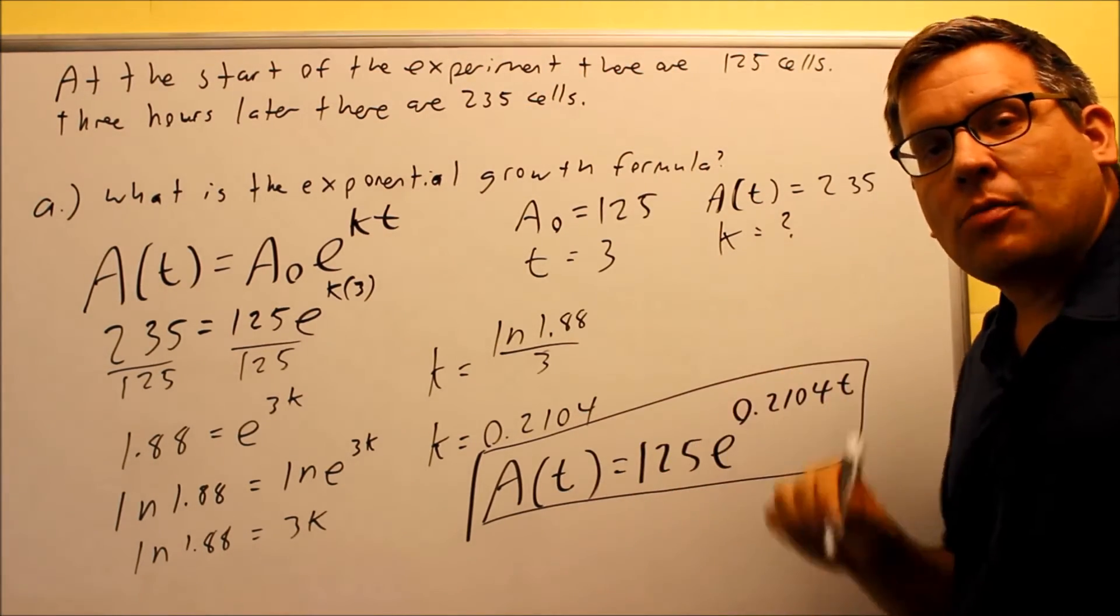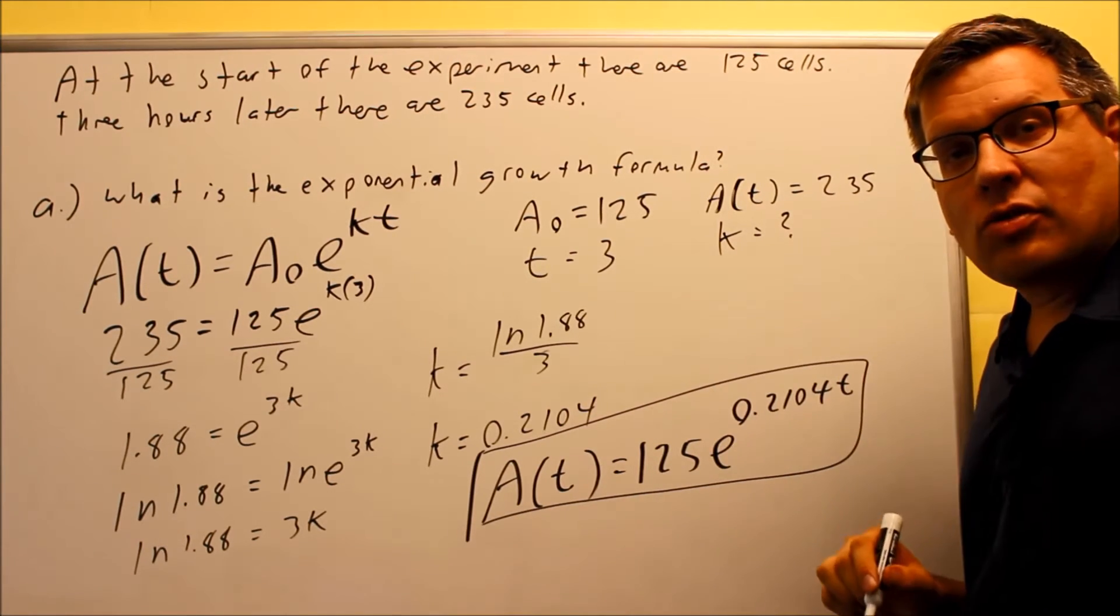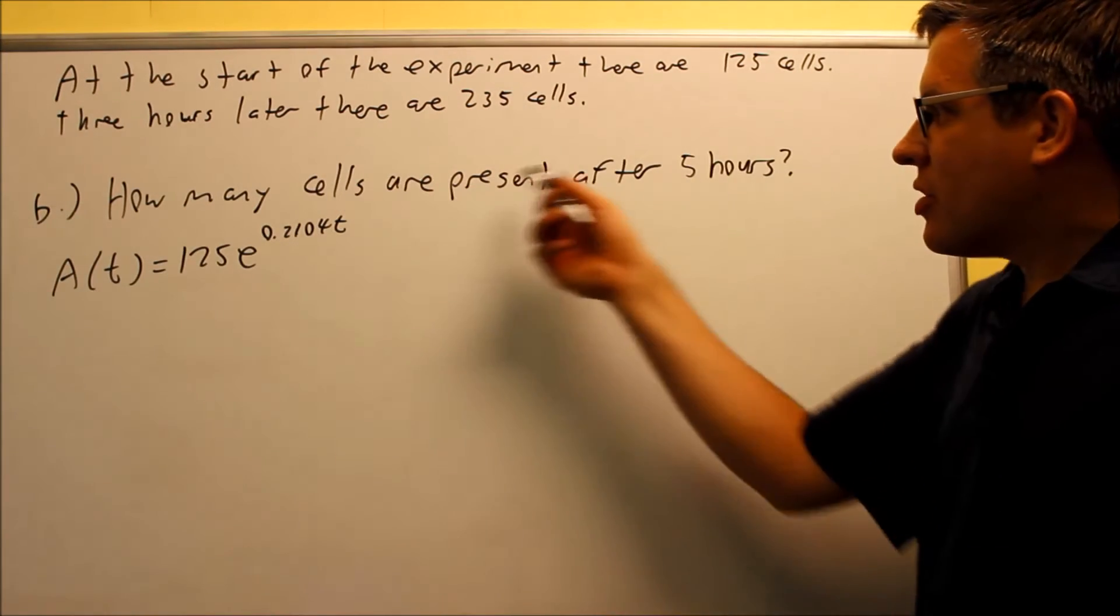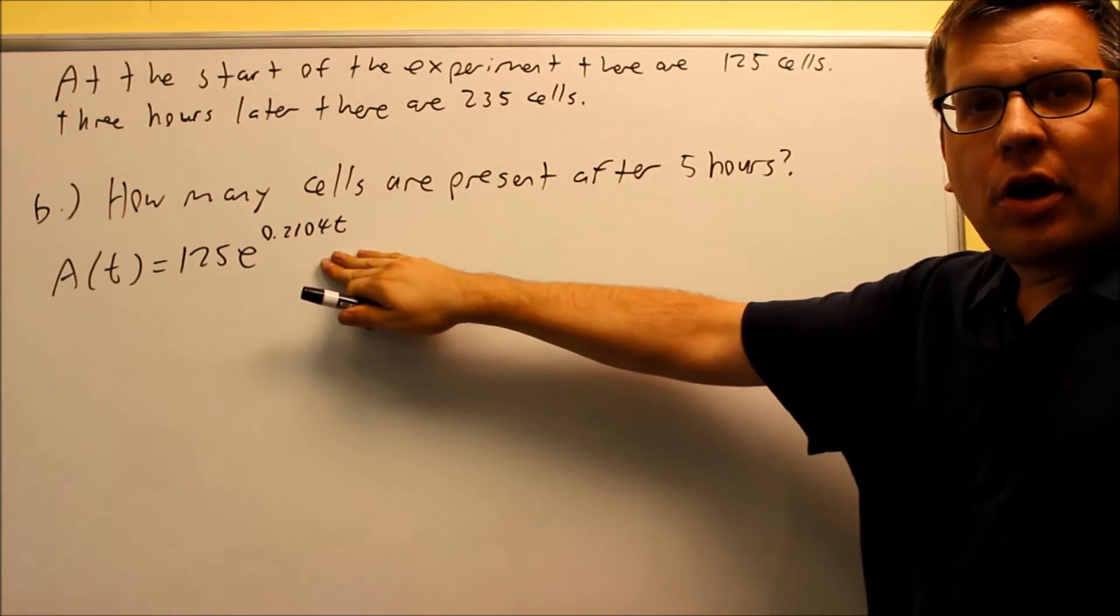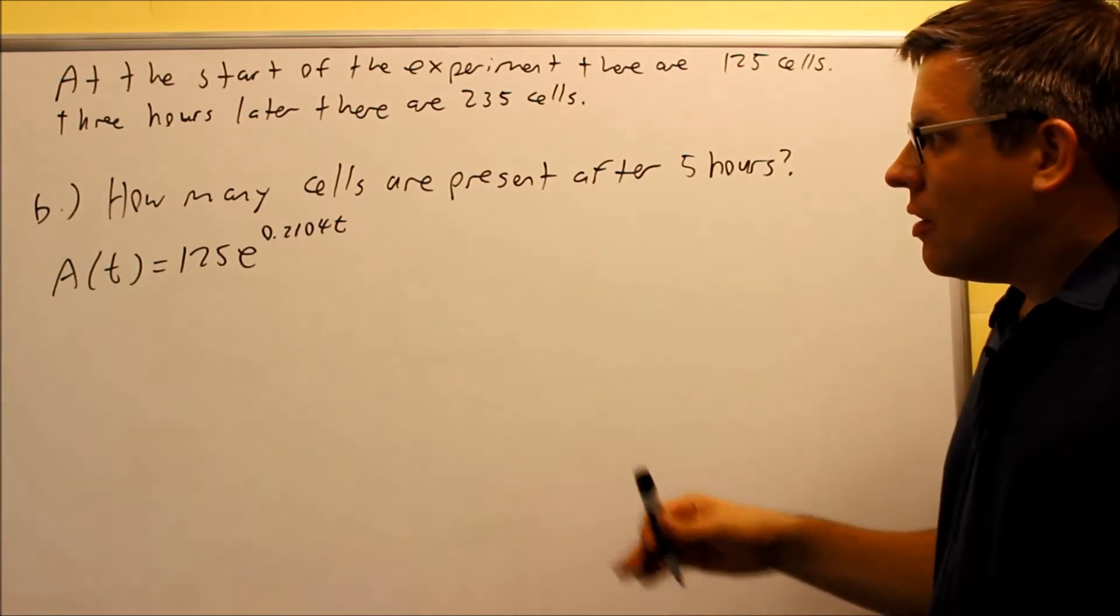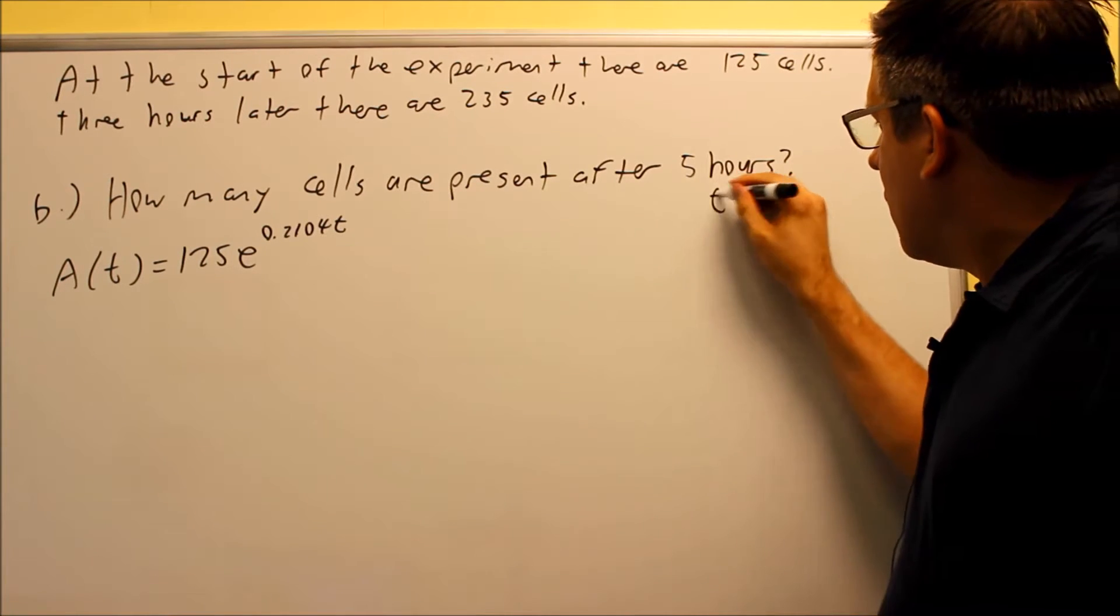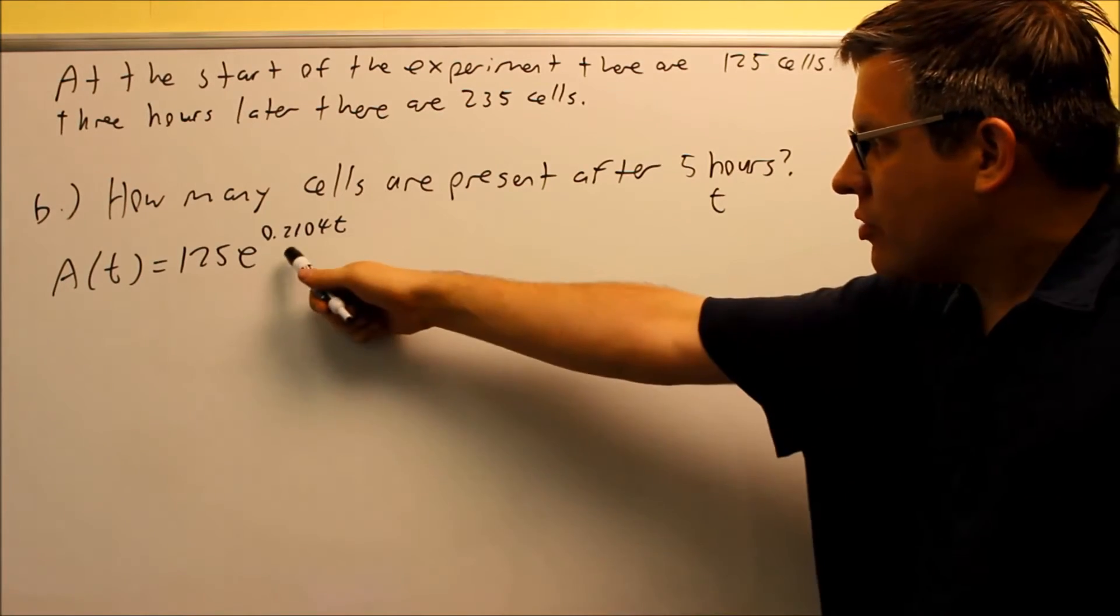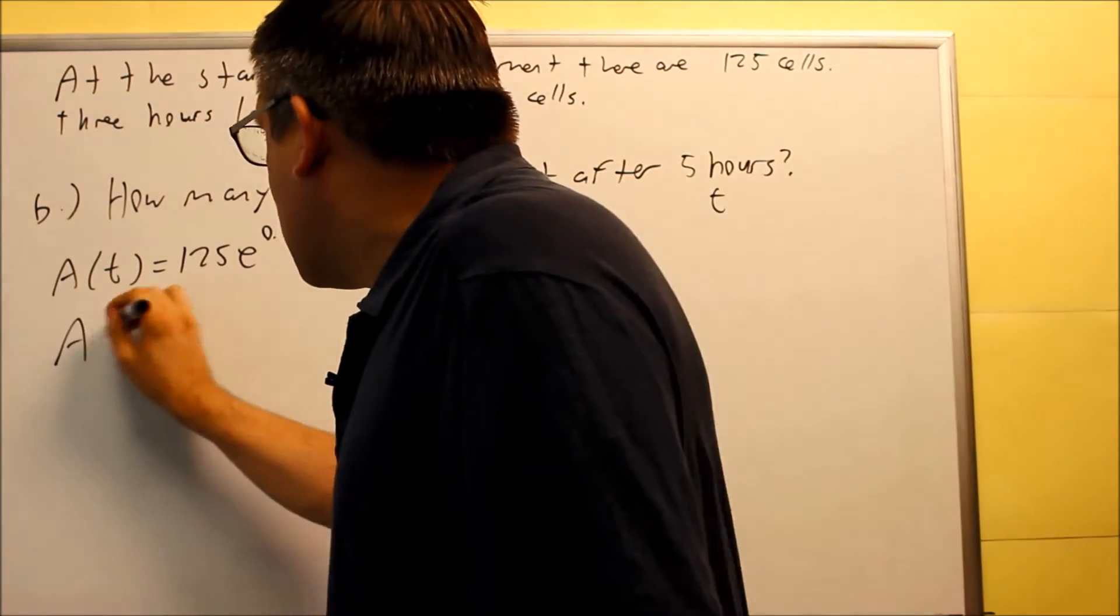So now we're going to do parts b and c, which are actually going to use this same formula, and we'll use that to answer the next couple questions. Okay, for part b, how many cells are present after five hours? This was the formula we came up with in part a. So we're going to use this again to answer part b and part c. So it says how many cells are present after five hours? So they're telling us that the five hours, that's going to be a t value. So we're going to put the five into this every place I see a t.